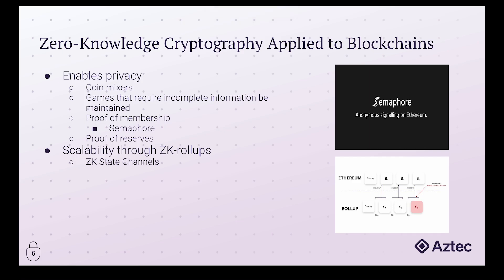Through the advent of ZK rollups, an exciting possibility that comes into view is the idea of a ZK state channel — a mechanism for transacting off-chain and submitting transactions on-chain at a later point in time. Through the use of recursive proofs, which we'll touch on later in this video series, you can envision an entire Battleship game being played off-chain and then rolled up into a single transaction put on-chain, thus eliminating the tedium of constantly having to wait for transactions to settle. This is something that is on the roadmap and will be implemented in a future version.